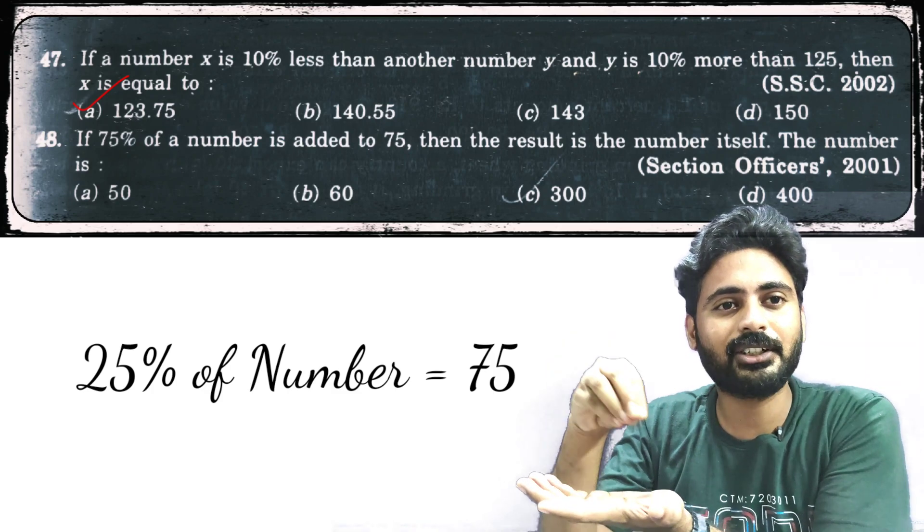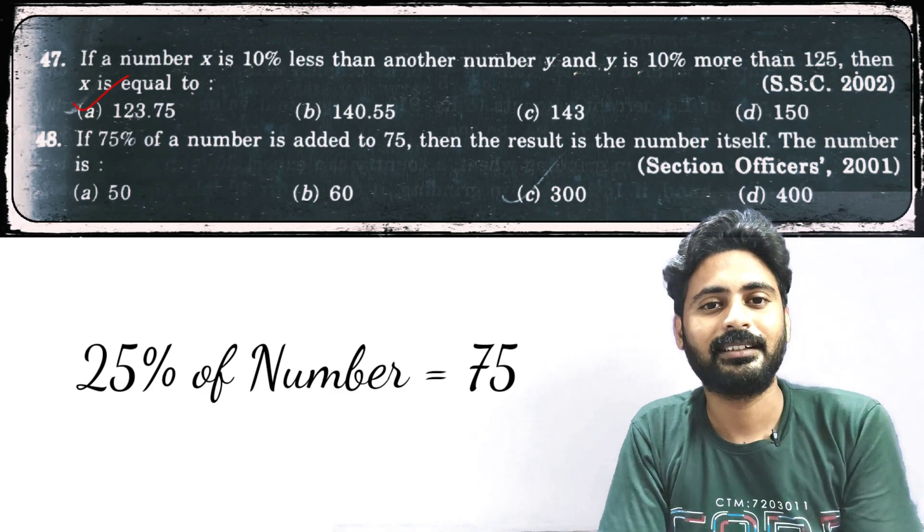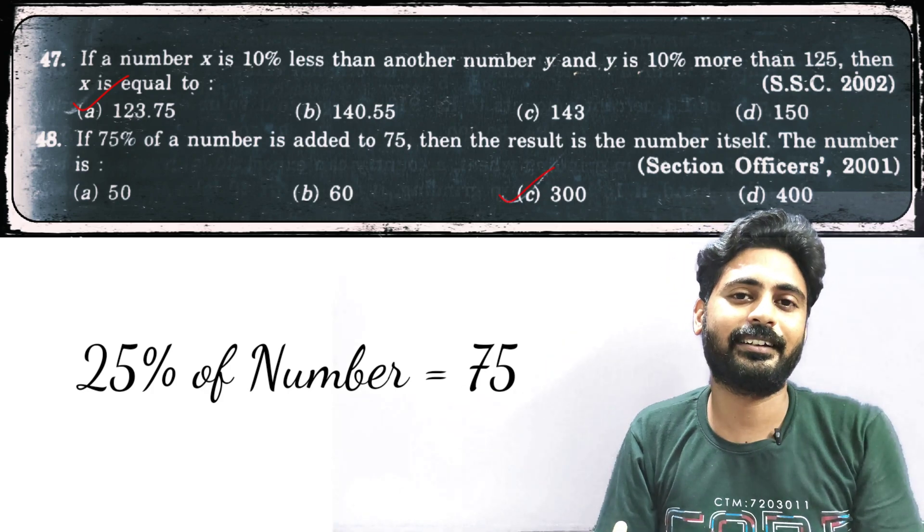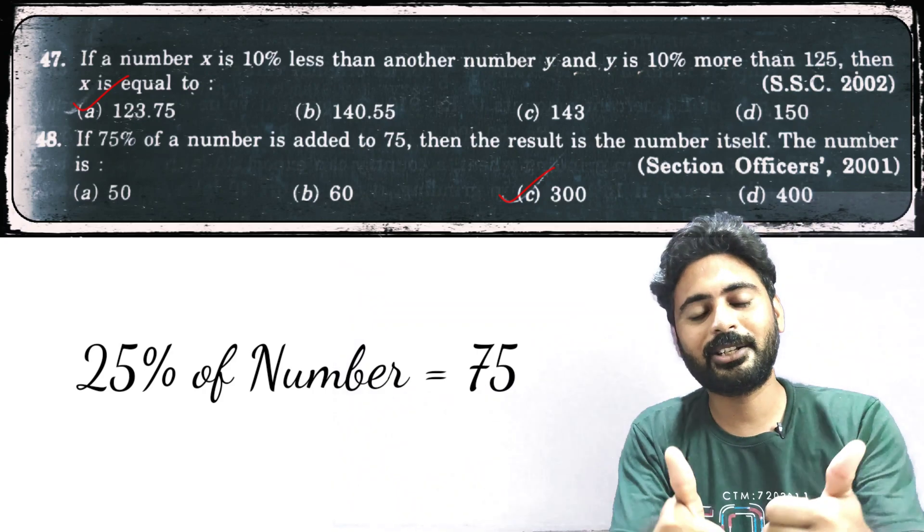25% is 75, which means 100% is 4 times 75, which is 300. I hope you understood this. If you didn't, please let me know in the comment box.